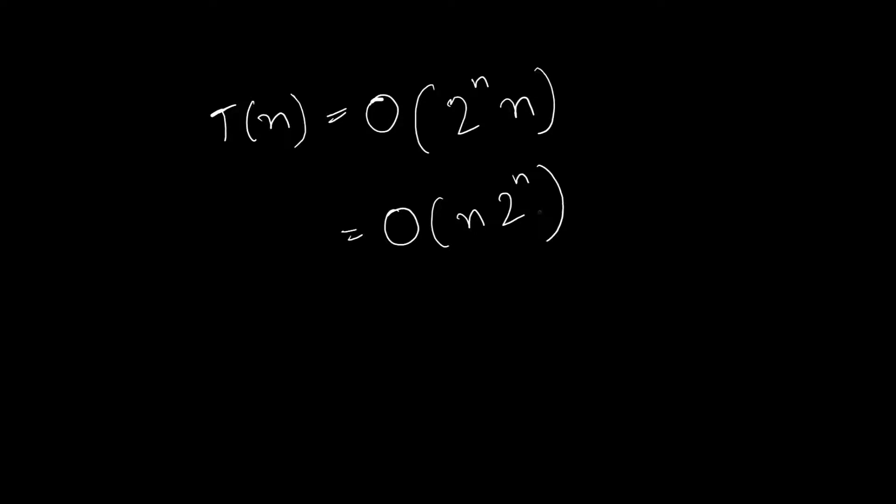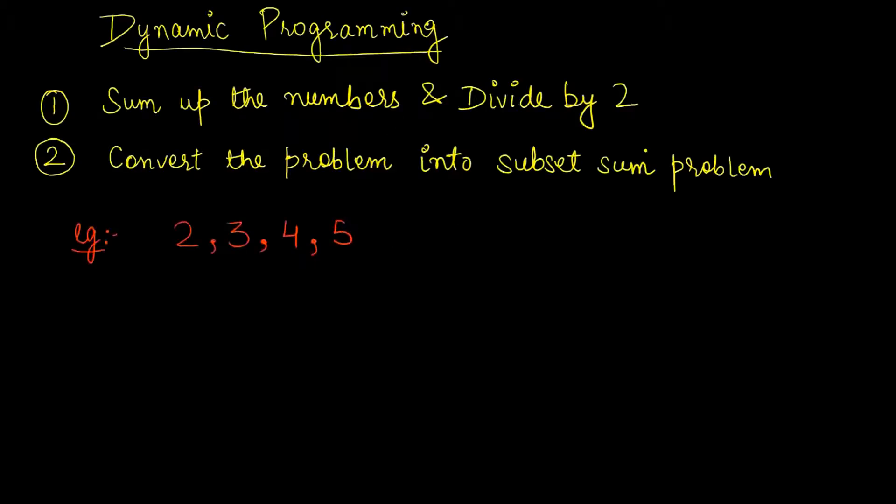Now let's find out whether we can optimize this solution or not. So for this we'll be using dynamic programming, where first of all I'll sum up the numbers and divide by 2. Why am I dividing this number by 2? As I have to divide it into two partitions.